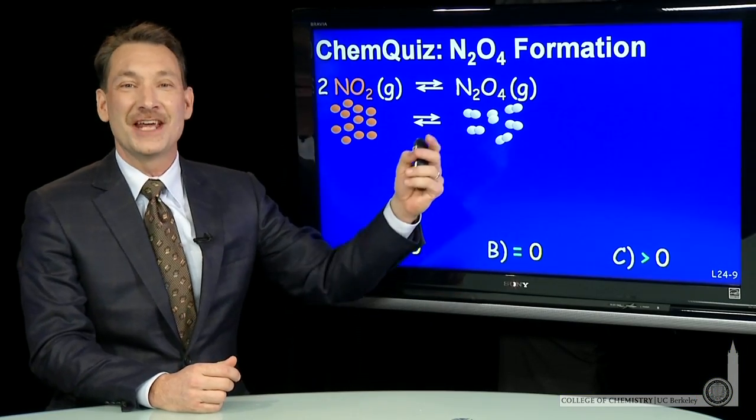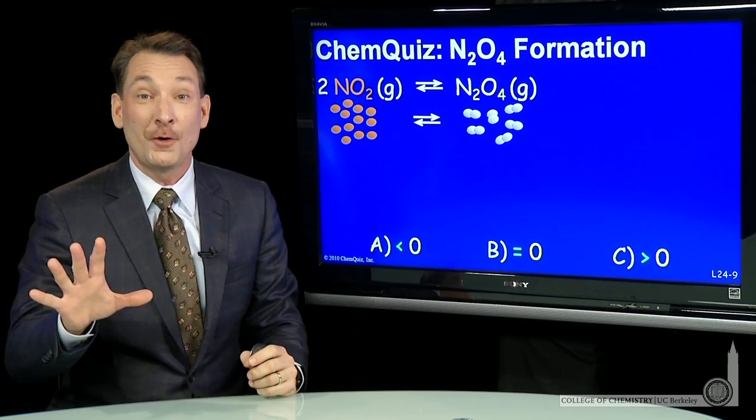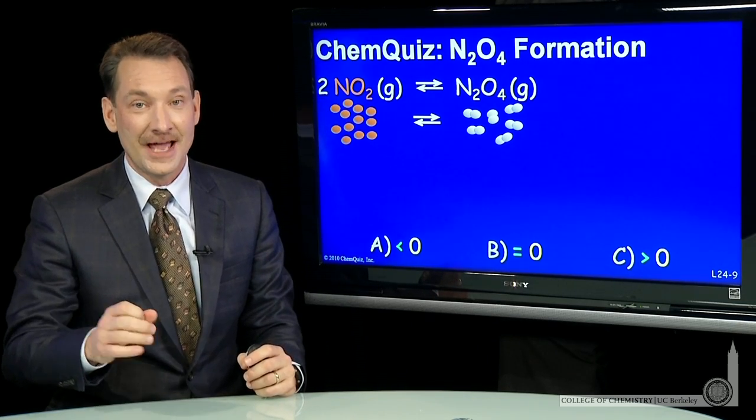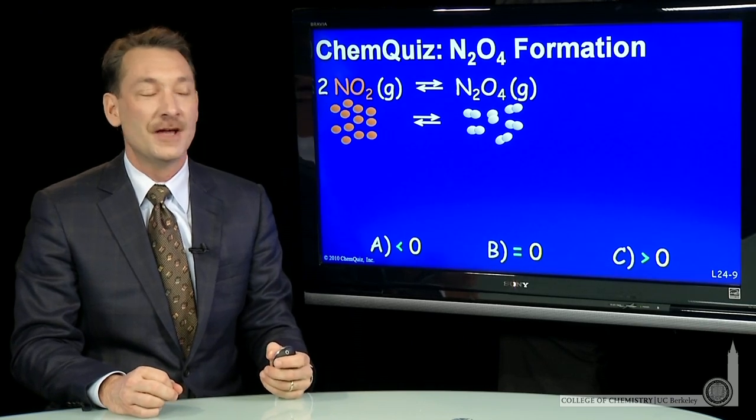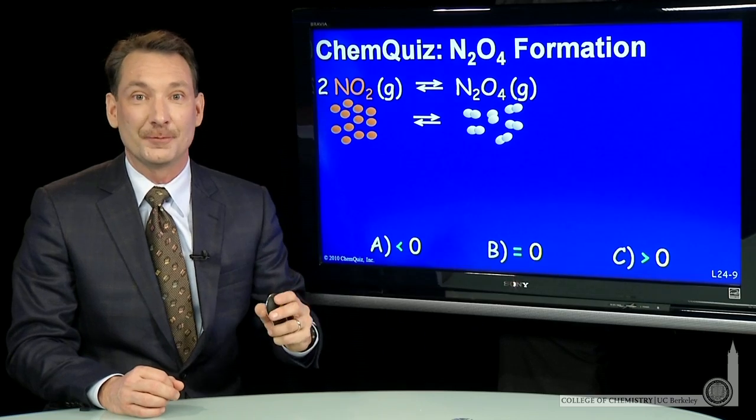We're looking at the dimerization of NO₂ to form N₂O₄, and we're told it's spontaneous—that is, delta G is negative at 25 degrees C. When we look at this reaction, we can predict a couple things about the entropy and the enthalpy.